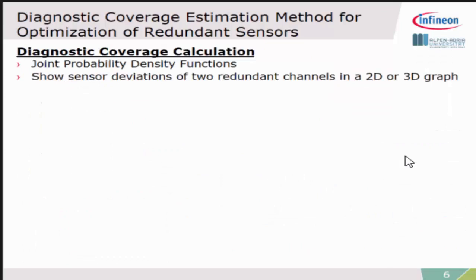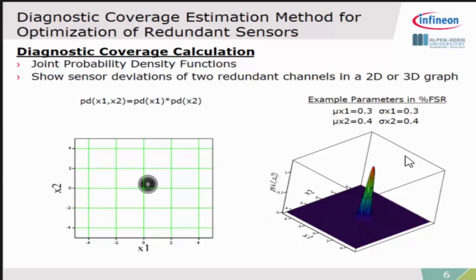Now coming to the diagnostic coverage calculations, this we did using joint probability density functions. Here is a short overview of how this looks in a 2D or 3D graph. These are the two-dimensional graphs of deviations. X1 is the deviation of channel 1, X2 the deviation of channel 2. You get then a nice joint probability density function, also superimposed with the faults, and here we can continue to calculate the probabilities.